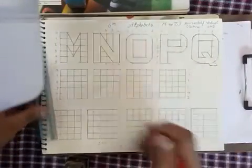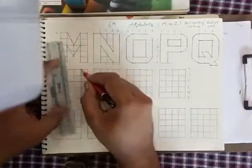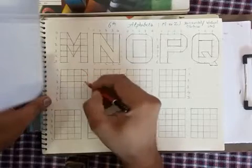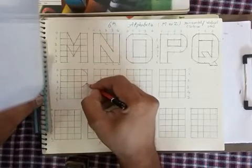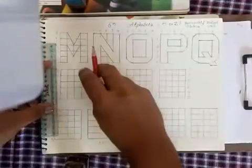We are making R now. For R, what you do? Make P. For R, first make P.